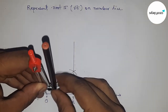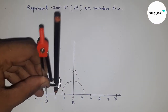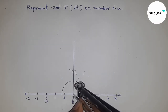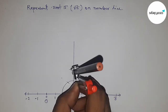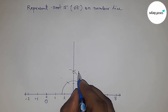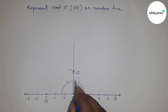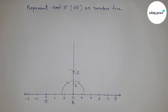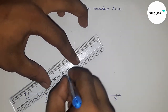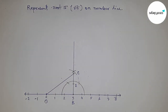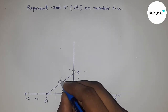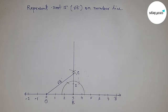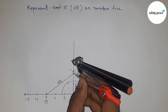Taking the length between any two numbers by compass, putting the compass here, and cutting the line two times. This is point C and this is two units. Joining C and O — this is the hypotenuse of the right angle triangle OBC, and this is obviously root 13.